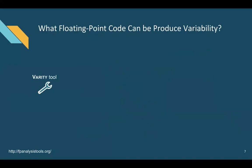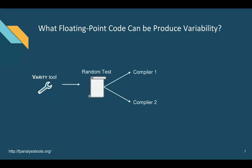There's a question: how do we know what floating-point code can produce variability? We're developing a tool called Variety that hopefully helps answer this. The tool identifies programs that produce floating-point variations by generating random tests and compiling them with different compilers on a given system, then running the tests with a given input and checking if the results differ. I'll show you a few examples of floating-point tests we found with this tool where we saw large variations.